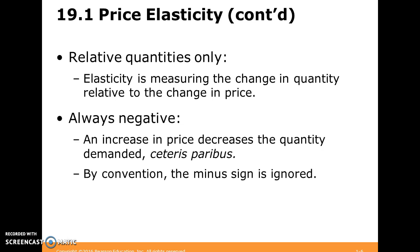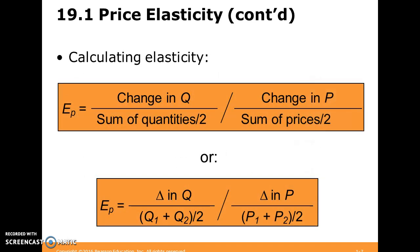By convention, we don't really look at the minus sign — if it's demand, we know it's there. Here's another way when we're talking about two prices or two quantities: we have the change in quantity divided by the average of the two quantities, over the change in price divided by the average of the price. That's a good way to calculate arc elasticity.